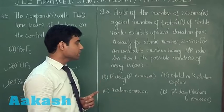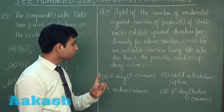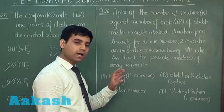For an unstable nucleus having N by P ratio less than 1, the possible mode or modes of decay is or are.